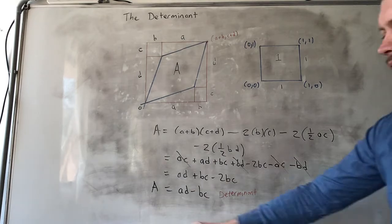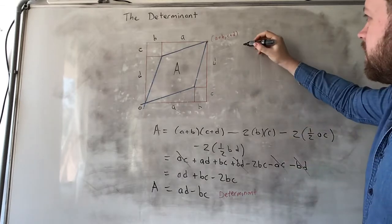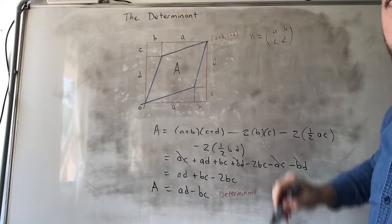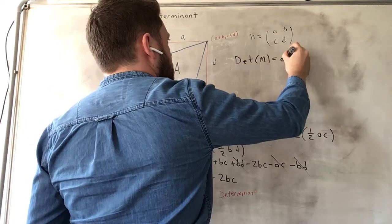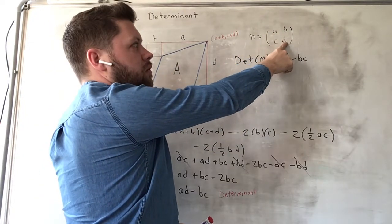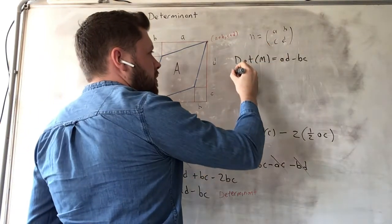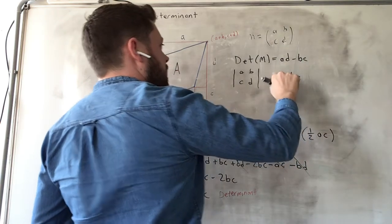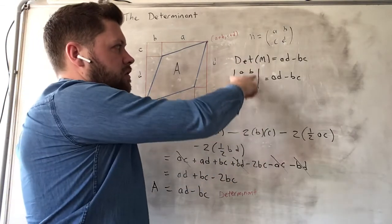So how do we write the determinant? If our transformation matrix is M with entries a, b, c, d, then we say the determinant of M equals ad minus bc. It's the top-left element times the bottom-right element, minus the top-right times the bottom-left. You can also write this with square brackets as |a b; c d| = ad − bc. These are interchangeable notations — determinant of matrix M, or written with two straight lines.